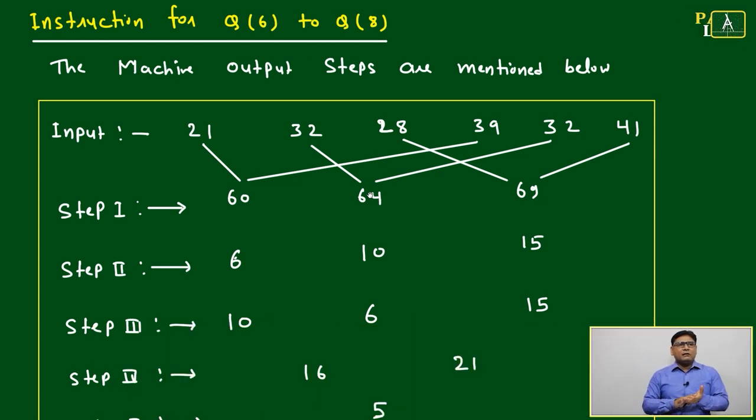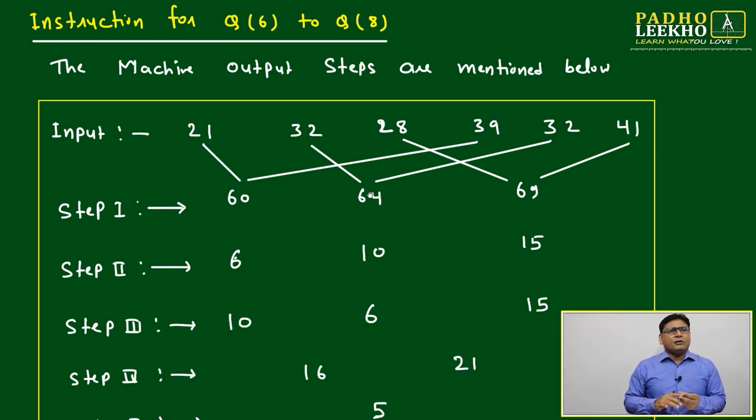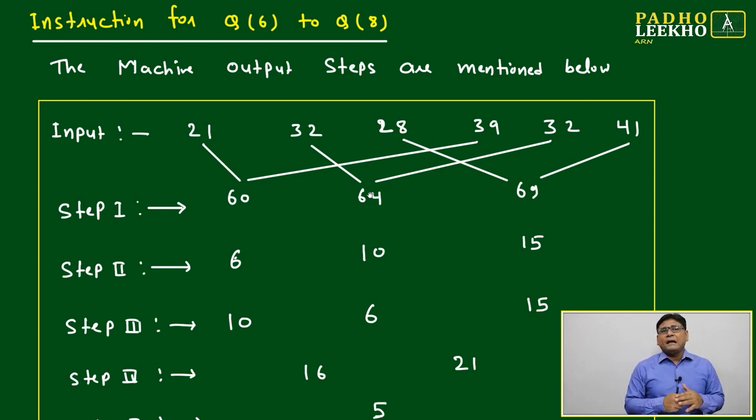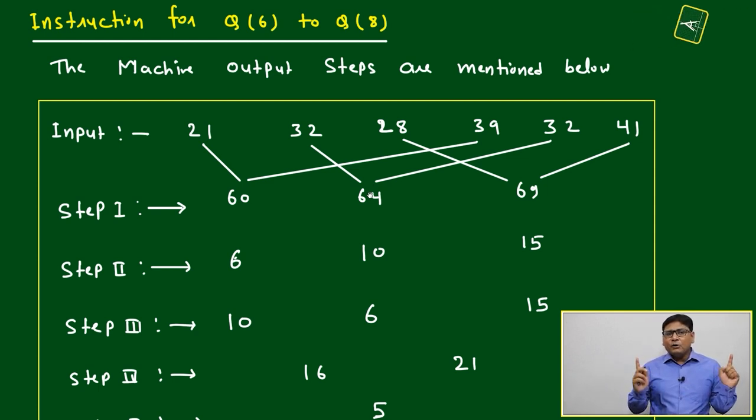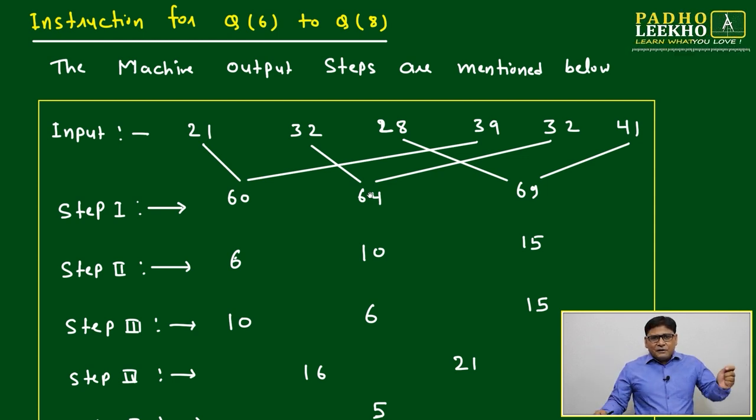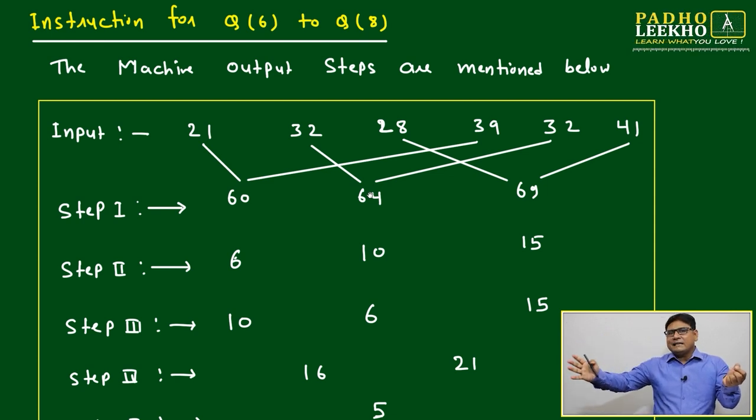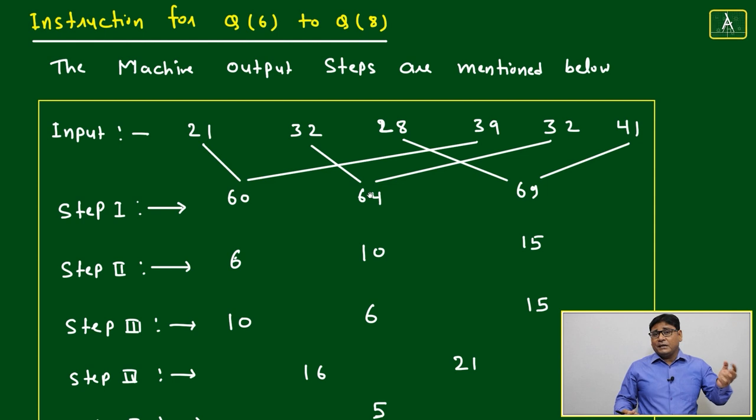We will move to the next type of question. Mathematically it is not challenging, but in the last case we have seen the number of elements in any of the steps is not decreasing or increasing. If we have started with six elements of input, output also we are getting six elements, but it is not always true.